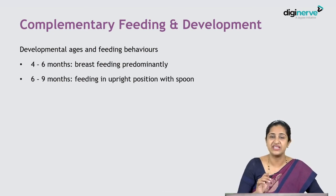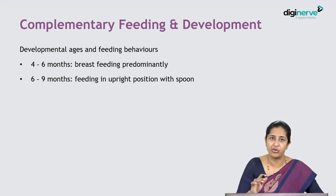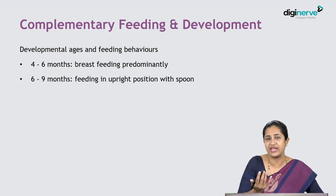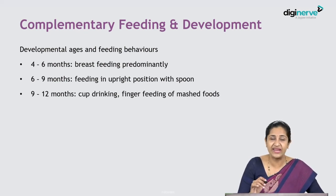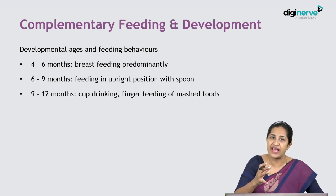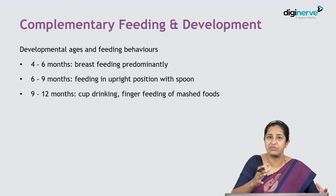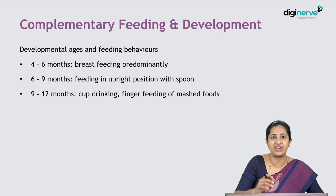Between 6 and 9 months of age, in gross motor milestones, the baby learns to sit up with support of his or her own hands. Once the baby is sitting up well, the baby can be fed in an upright position using a spoon. Between 9 to 12 months, the baby starts having a good grasp — pincer grasp is developing and a tight grasp where the baby can hold cups and mugs is attained.